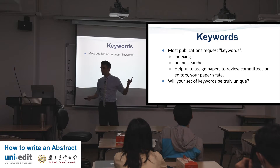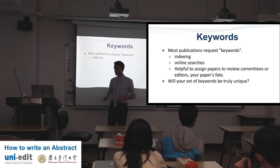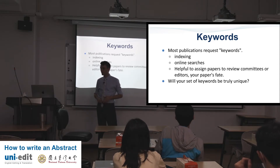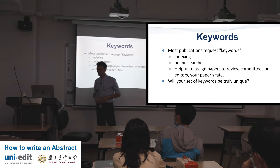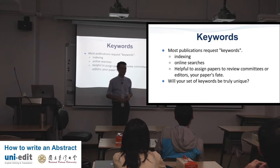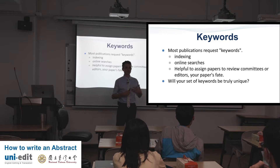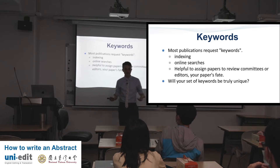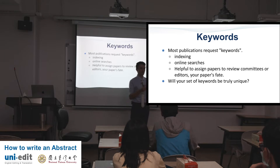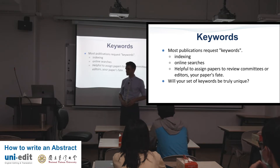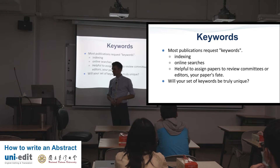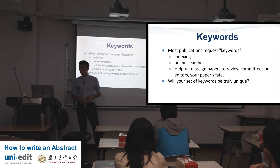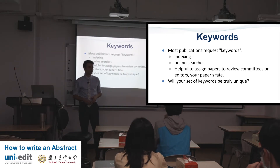Keywords — most publications request keywords. This is good for indexing, how they organize abstracts in their database, and for online searches. It's also helpful to assign papers to review committees or editors. You're all civil engineering — maybe if you're working on bridges, then your keywords will get your paper assigned to peer reviewers who have experience in civil engineering with bridge construction. Will your set of keywords be truly unique? If there are a thousand papers with your same keywords, your paper is going to be really difficult to find.